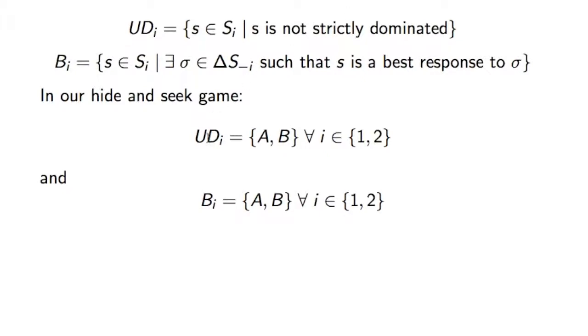And if we look at UD_i in our game, in our game of hide and seek, well that's simply for both players—in this particular situation it's the same. So UD for Ben and UD for me is {A, B}, both strategies, because A is never strictly dominated.